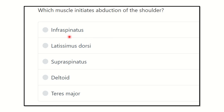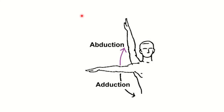The options are: supraspinatus, latissimus dorsi, deltoid, and teres major. We need to identify the muscles of abduction and then find out which muscle initiates abduction of the shoulder.